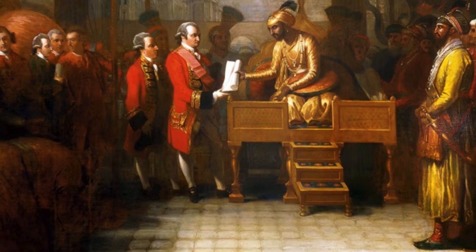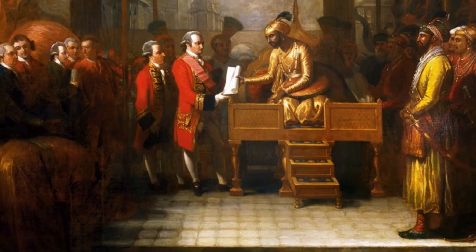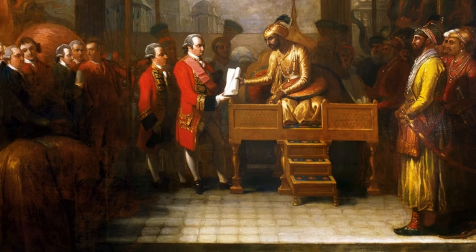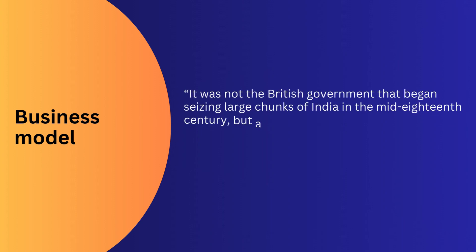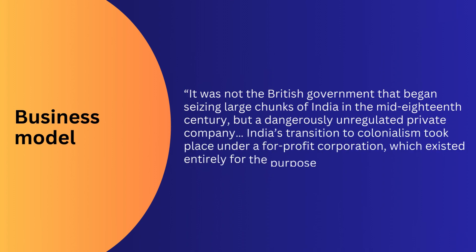The company used its treacherous ways to take the natives of India towards destitution. Interestingly, the East India Company's business model and its operations are somewhat similar to the multinational corporations, or MNCs, that exist today and operate across the world. Investors' interests are taken into consideration by these companies, akin to how the East India Company pleased its investors in the 1500s. As Dalrymple writes in the book's introduction, it was not the British government that began seizing large chunks of India in the mid-18th century, but a dangerously unregulated private company. India's transition to colonialism took place under a for-profit corporation which existed entirely for the purpose of enriching its investors.